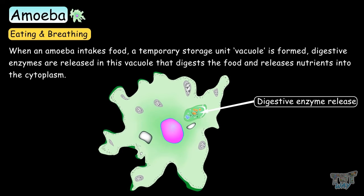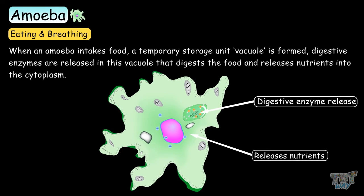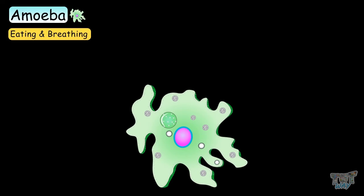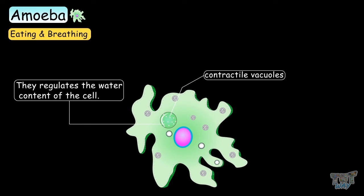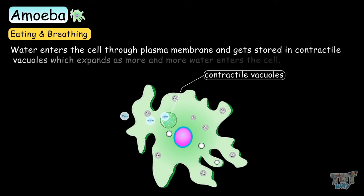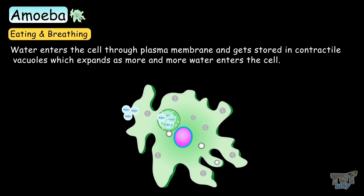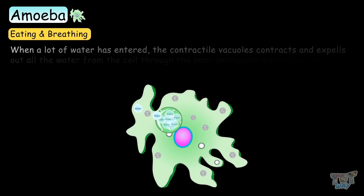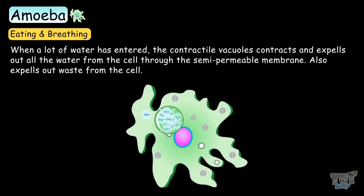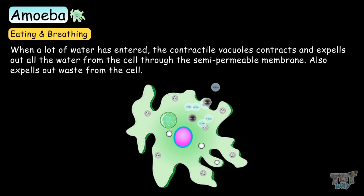There are special vacuoles called contractile vacuoles that regulate the water content of the cell. Water enters the cell through the plasma membrane and gets stored in a contractile vacuole, which expands as more water enters. When a lot of water has accumulated, the contractile vacuole contracts and expels the water from the cell through the semi-permeable membrane. It also expels waste from the cell.